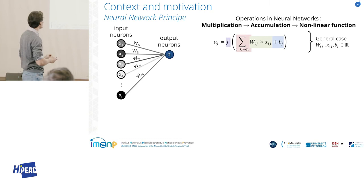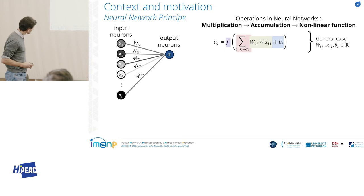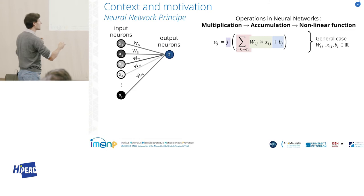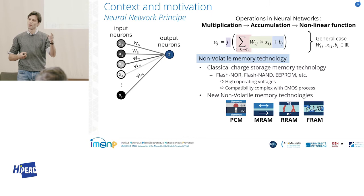What is a neural network? There are input neurons connected to output neurons through synapses, and each synapse has a weight. The main operation is the multiplication between the input neuron and the synaptic weight, accumulation, and a non-linear activation function for the output neuron. In our approach, the synaptic weights are stored in non-volatile memory.